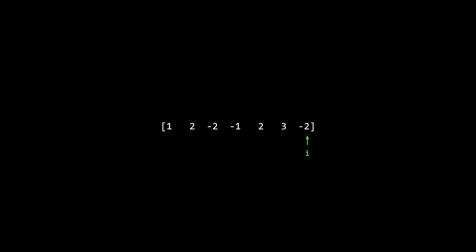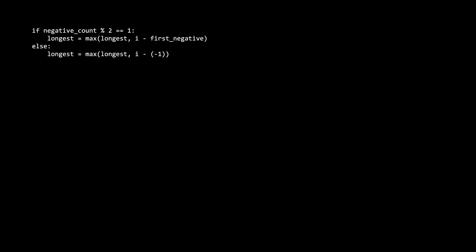The other case is an odd number of negatives when we are at position i. For example, when i is at the last position and there are three negatives — negative two, negative one, and negative two — the longest subarray ending at i goes from i back to one position to the right of the first negative. This is because with an odd number of negatives the product is negative, but if we exclude the earliest negative we have an even number, making the product positive.